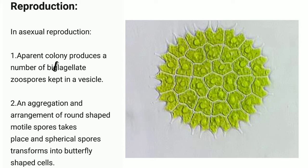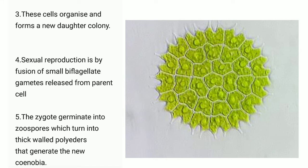Reproduction. In asexual reproduction, Point 1: a parent colony produces a number of biflagellate zoospores kept in a vesicle. Point 2: An aggregation and arrangement of round-shaped motile spores takes place, and the spherical spores transform into butterfly-shaped cells. Point 3: These cells organize and form a new daughter colony.